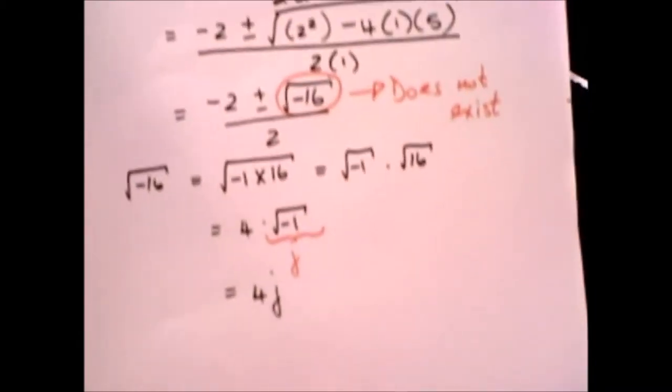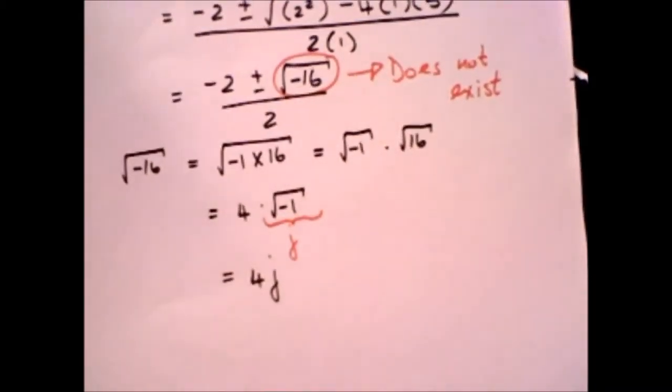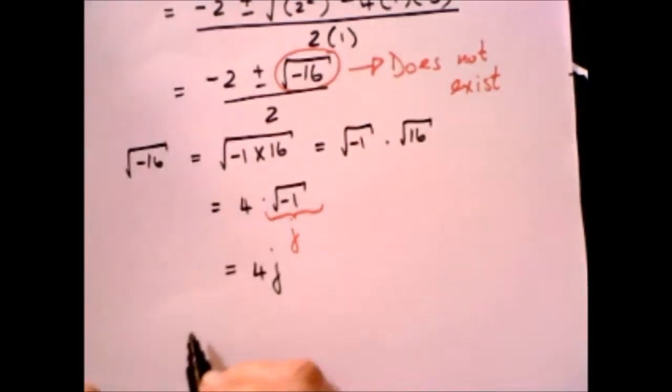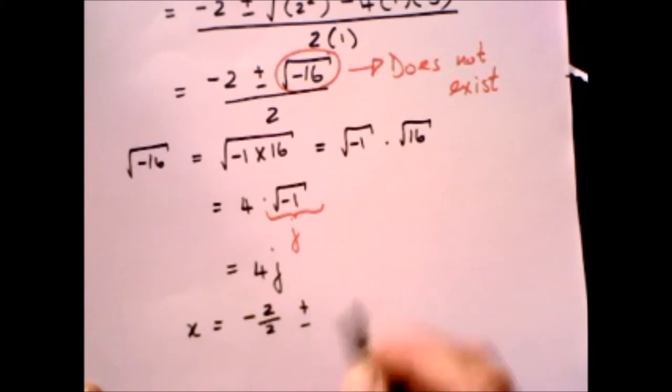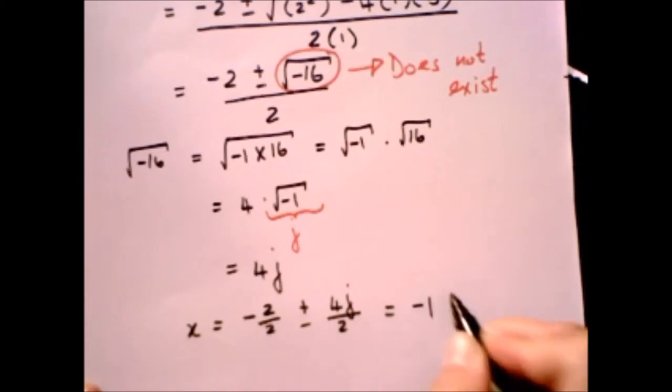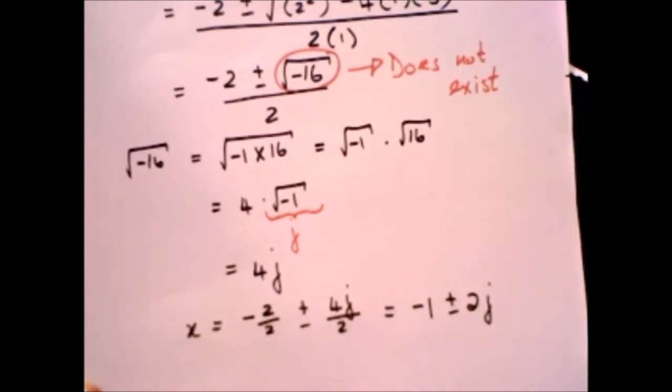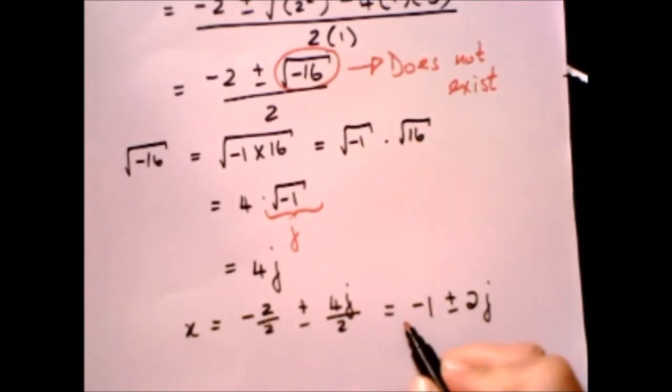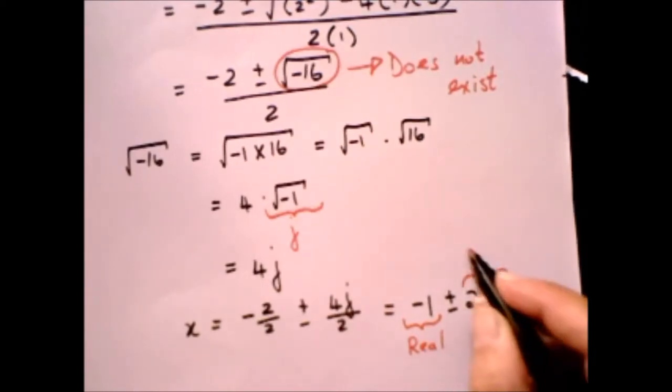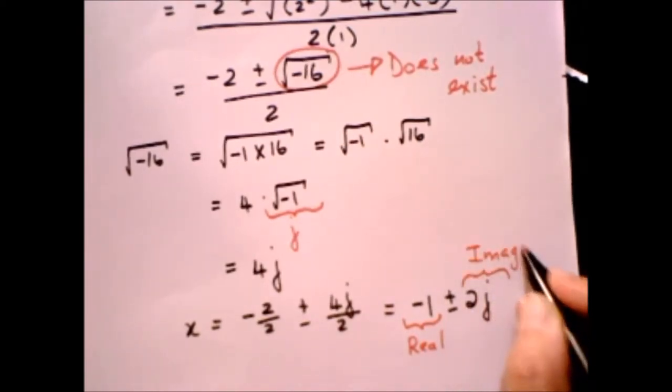So if you go back to your example now, you will see that your x is going to be equal to minus 2 over 2 plus minus 4j over 2, which is going to be minus 1 plus minus 2j. And this is a complex number, made up of what we call the real part and the imaginary part.